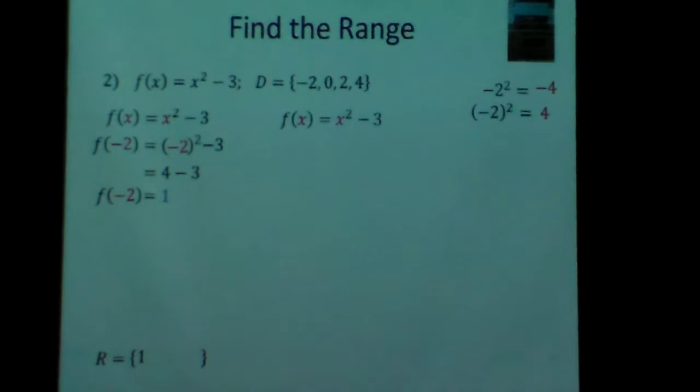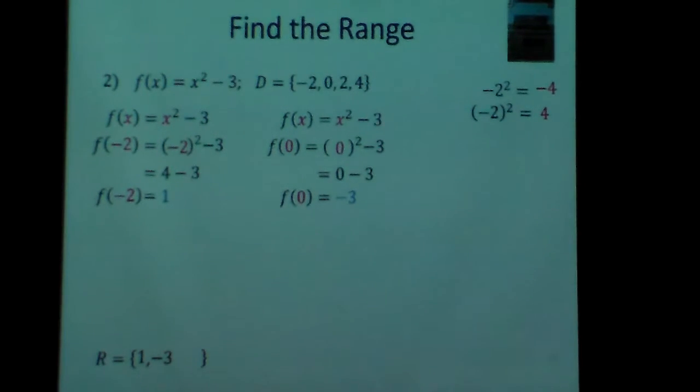Now, let's go ahead and plug in our next number, which will be 0, and what's 0 squared? 0. And 0 minus 3 is what? Negative 3. So let's put negative 3 in there for a range. We have 1 and negative 3.